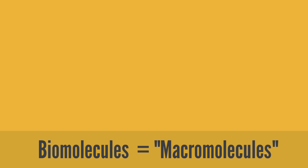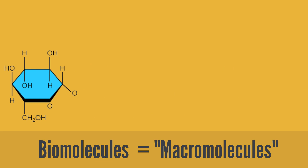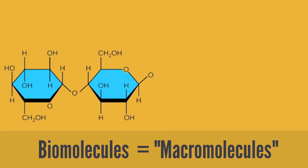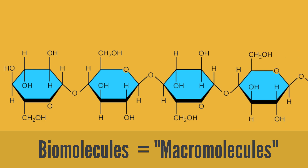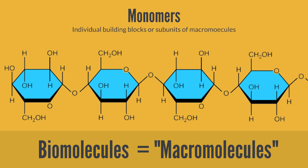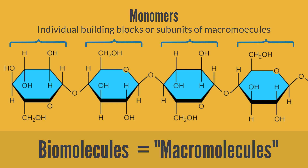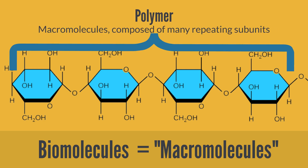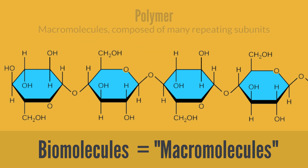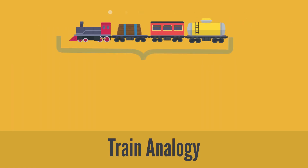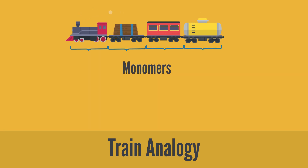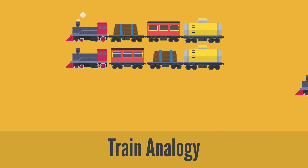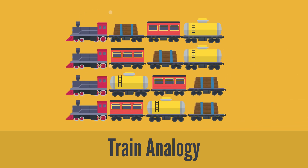Biomolecules are typically large, and we call them macromolecules. Many macromolecules are formed by linking together a number of identical, or very similar, smaller organic molecules. The smaller molecules act as building blocks and are called monomers, and the macromolecules that result from their linkage are called polymers. A structural analogy would be a train, where the complete train represents the polymer and the individual train cars the monomers. By changing the order of the train cars, a large number of different trains can be created.